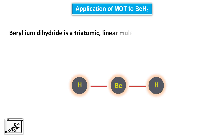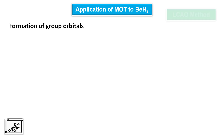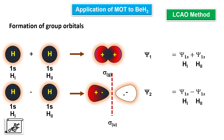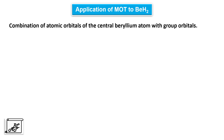Just to revise, beryllium dihydride is a linear molecule. In the same way we can consider the water molecule also in a linear arrangement, just with oxygen as the central atom instead of beryllium. If we consider it like this, the first step would be formation of group orbitals according to the LCAO method. As two 1s orbitals are combining, there will be formation of two group orbitals, which will then overlap with atomic orbitals of the central atom according to the SALC method.